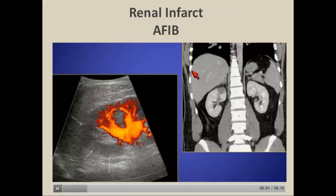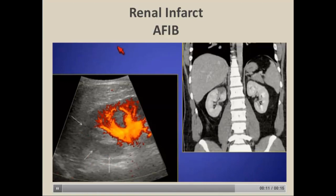Here's another example of a patient with an infarct. Power Doppler is very sensitive for tracking flow in small vessels, and you can see absence of perfusion in the upper pole. This patient had atrial fibrillation, again confirmed on CT scan.